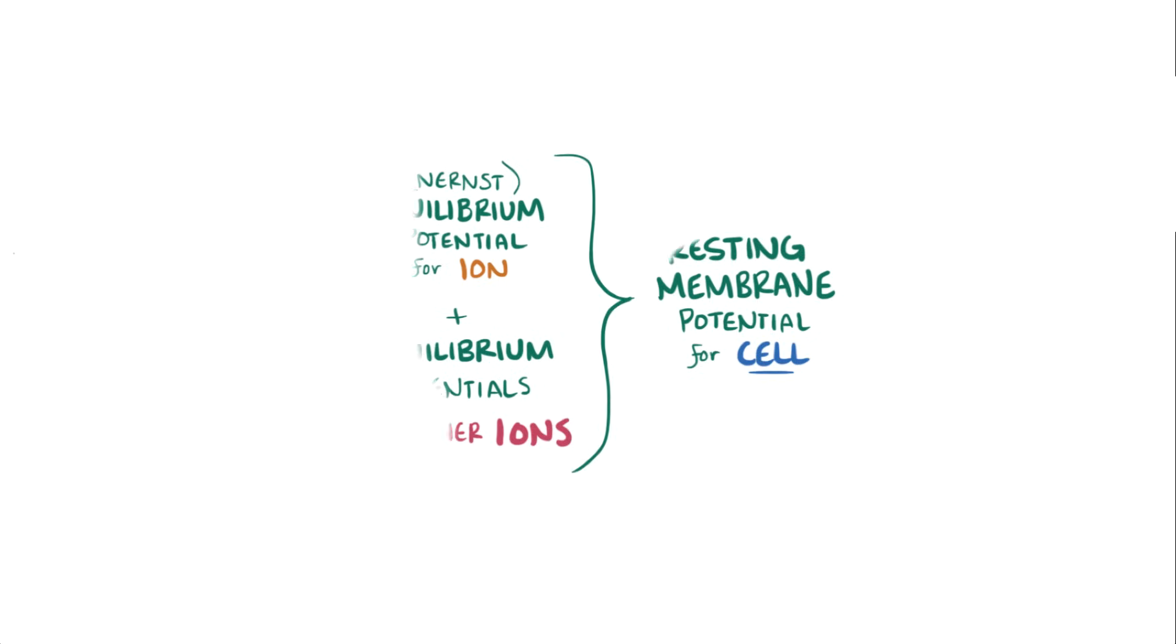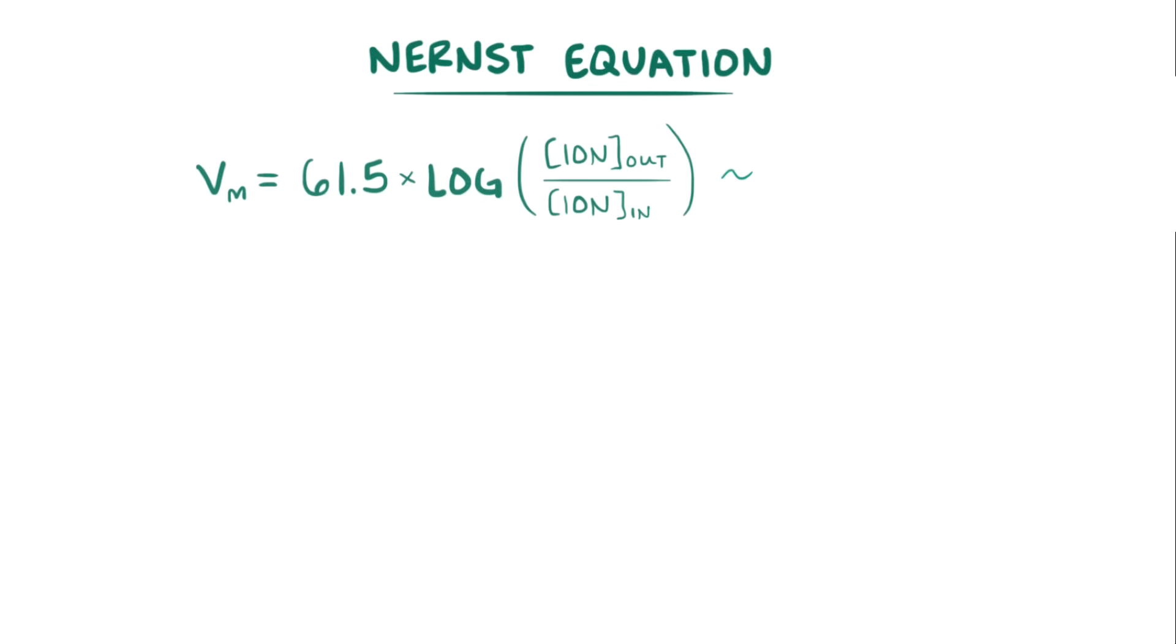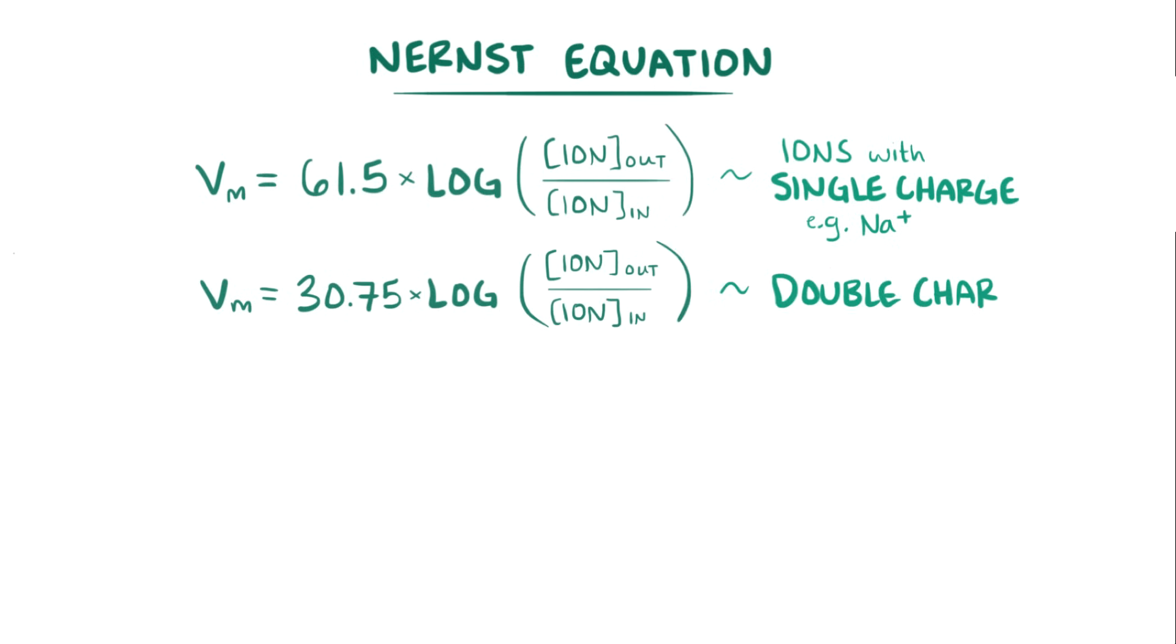Now, the formula that tells us the equilibrium potential for each ion is called the Nernst equation, and it's Vm for membrane equals 61.5 times the log of the concentration of the ion outside the cell divided by the concentration of the ion inside the cell for an ion with a single charge like sodium, and Vm equals 30.75 times the log of the concentration of the ion outside divided by the concentration of the ion inside for an ion with a double charge.